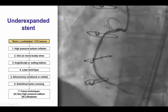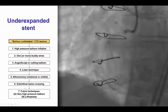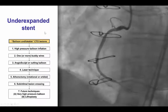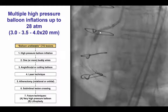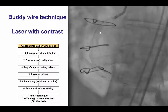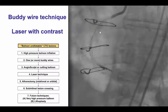This is a so-called balloon undilatable lesion, and there is an algorithm for treating those lesions. The first step was to use high-pressure balloon inflations with multiple balloons. We used 30, 35, and 40 atmospheres balloons up to 28 atmospheres. That seemed to improve the stenosis; however, it was not adequate expansion. This was performed with and without the presence of a buddy wire.